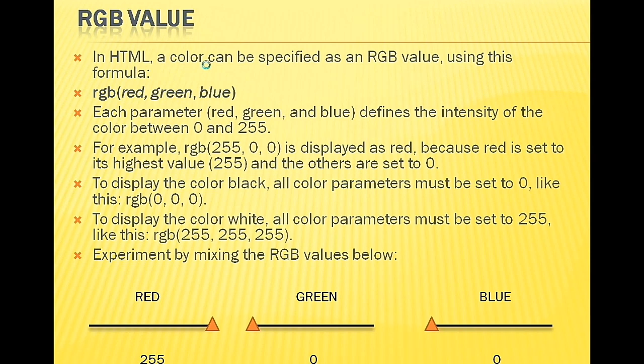Same as mixing water paints with colors, we assign color values. In RGB, 255 means full color and 0 means no color. So rgb(255, 0, 0) means red is set to full 255, and green and blue are set to 0, which is why we get a red color.